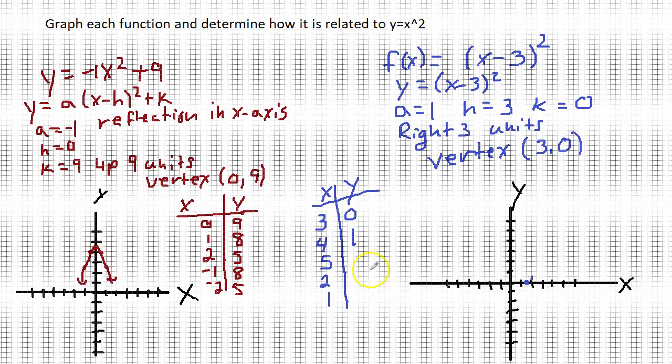Now plug in 5. 5 take away 3 is 2. 2 squared is 4. So we have the point 5 comma 4. So there's 2 and 4. So 5 and 4 right there. Awesome.